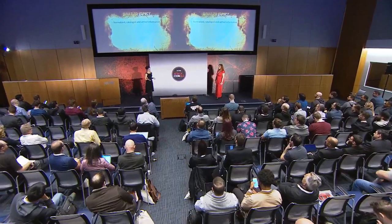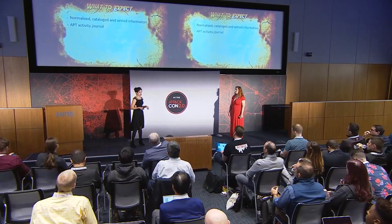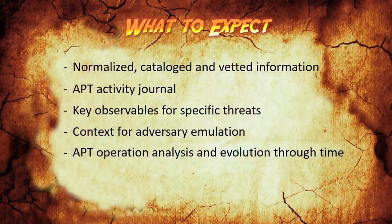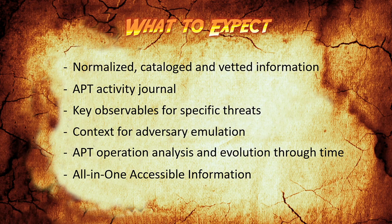What you should expect from a project of this kind is normalized and cataloged information, so you can find what you're looking for in a specific place in the report. You can also see it as an activity journal — there are key observables for each threat and a gathered collection of APT operations, so you can see their evolution. The idea is to have everything in one place so you don't have to go through multiple sources, because they've already done that for you.